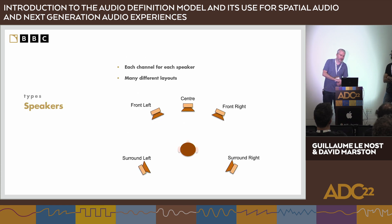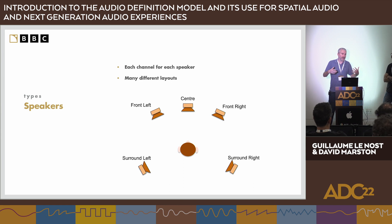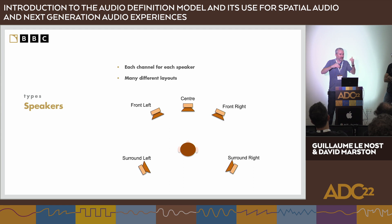Channel-based audio — stereo, 5.1, various layouts — has been around since the beginning. Each channel is designed to go to each speaker with no complex signal processing. But as we get into more immersive sound, more layouts keep appearing: 5.1, 7.1, 9.1, 5.1.4, 22.2, and so on. All these different layouts need a different ordering of channels, so we need metadata to describe what these channels are, or we'll get mixed up.